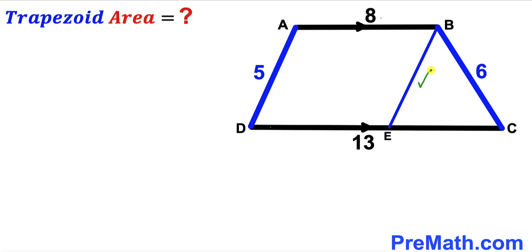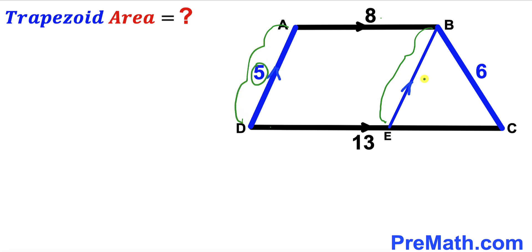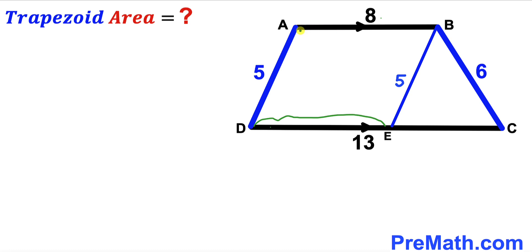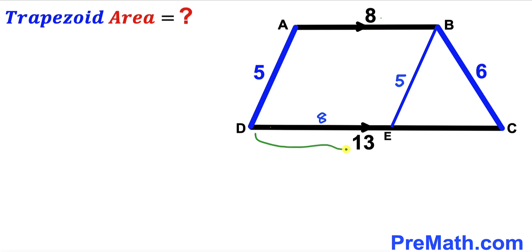I have drawn segment EB such that segment EB is parallel to side AD. Therefore, segment EB length equals side AD length, which is 5. Now we can observe that segment DE is going to equal base AB length, which is 8. Since the whole base CD length is 13, segment CE is going to be 13 minus 8, giving us CE equals 5.